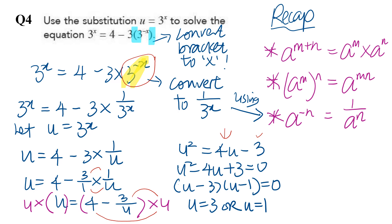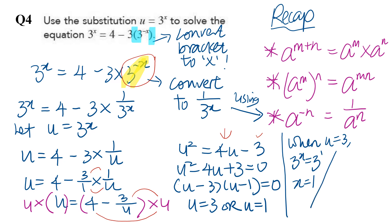Remember we're finding the values of x, not u. When u equals three, three to the power of x equals three — same base, so x equals one. When u equals one, three to the power of x equals one. Since three to the power of zero equals one, x equals zero. Alternatively, write one as three to the power of zero — any base to the power of zero gives one, so depending on your base, the exponent on the right will be zero.